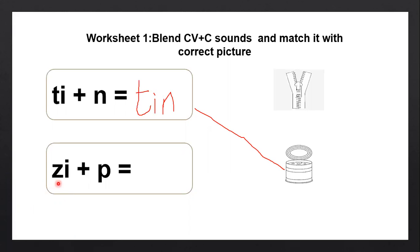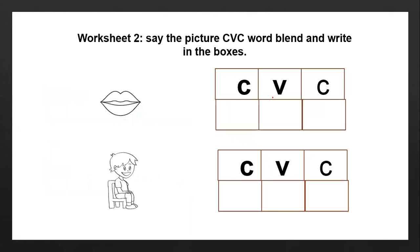Okay, now what's the next one? Z-I, Z-I-P, zip. There's the picture of zip here, so we'll write again Z-I, Z-I-P, zip and match it with the picture of zip here.